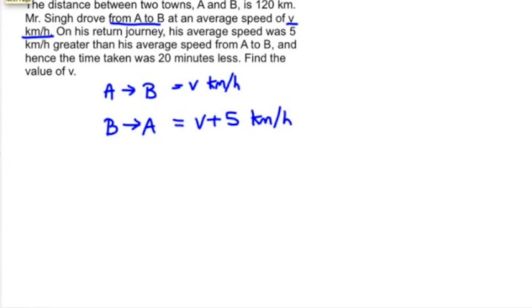So then the time taken, we don't know how much time he took, but we do know that the distance between the two towns is 120 kilometers. So if we take that 120, divide it by the kilometers per hour, we're going to get the time that it took to make the trip.